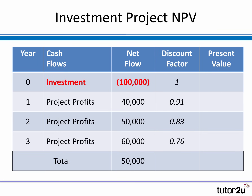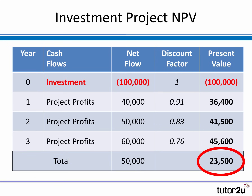We apply the discount factors taken from the table, assuming a 10% required rate of return. We then multiply each net flow by the discount factor. The initial investment of £100,000 is at time zero, so its discount factor is one. For year one, a profit of £40,000 is multiplied by the discount factor of 0.91 to give a present value of £36,400. We do the same for year two and year three to give us the present values of those cash flows. To work out the net present value, we simply take the present value column and add them all up. Taking the negative £100,000 investment and adding in the positive present values of the three years' cash flows gives a positive NPV of £23,500.